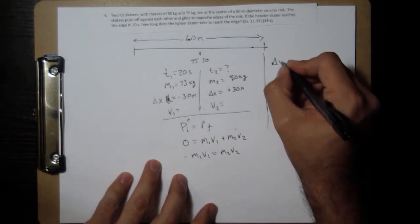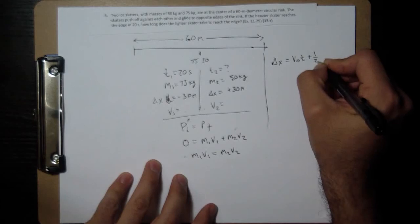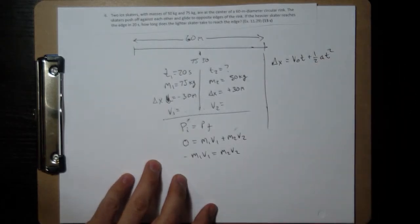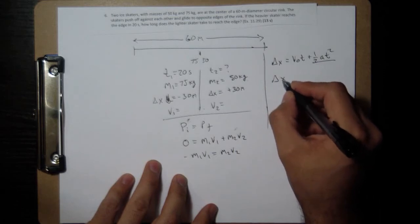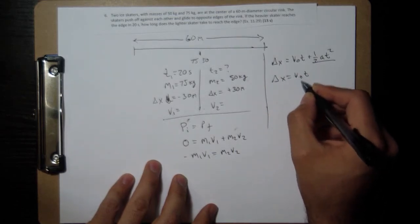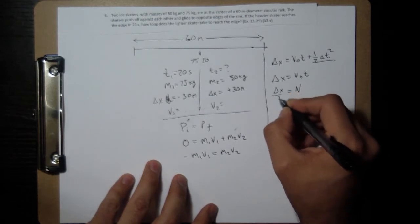And because it's constant velocity, if you remember the kinematic equations delta x equals v naught t plus one half at squared, well if we have no acceleration this is just delta x equals v naught t. And there's no point in writing v naught, so v is equal to delta x over t.